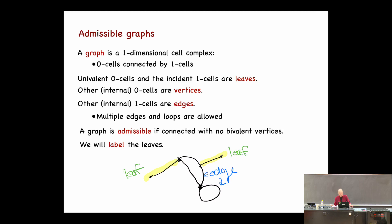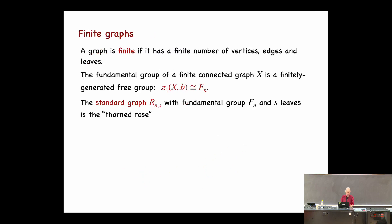The graphs I'm going to talk about today are going to be admissible. What I mean by admissible is that they're connected and they don't have any bivalent vertices. There are two reasons: first, I'm basically a topologist, and bivalent vertices don't change the homeomorphism type of the graph so I don't need them. Second, if I allow bivalent vertices, my spaces won't be finite dimensional, but I want finite dimensional spaces. My admissible graphs will also have their leaves labeled with numbers — one, two — and will always be finite, meaning a finite number of vertices, edges, and leaves.